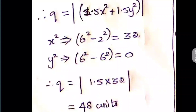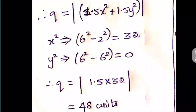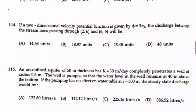So q = |1.5x² + 1.5y²|. Using coordinates (2,6) and (6,6): the x terms give 6² − 2² = 32, and the y terms give 6² − 6² = 0. Therefore q = 1.5 × 32 = 48 units, so option D is the right answer.